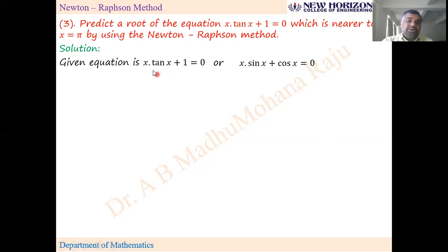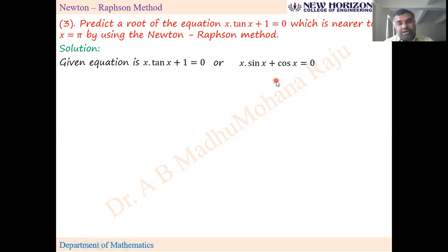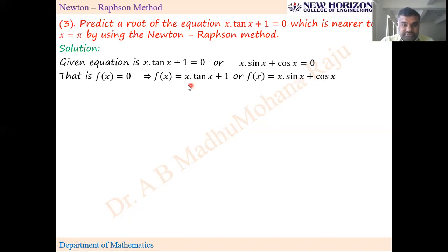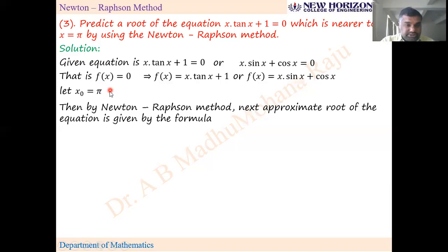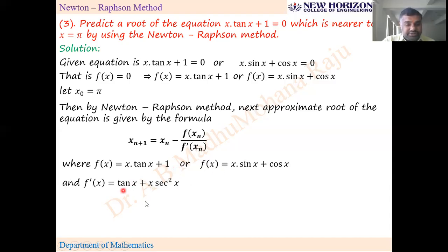The reason for rewriting using sin and cos: differentiating x·tan(x) gives sec²(x), which can cause confusion in the calculator. Secant square can be written as 1/cos², but to avoid confusion, convert tan to sin and cos. So f(x) is either x·tan(x) + 1 or x·sin(x) + cos(x). Use corresponding f'(x) consistently. Since f'(x) = x·cos(x) is convenient, use f(x) = x·sin(x) + cos(x).